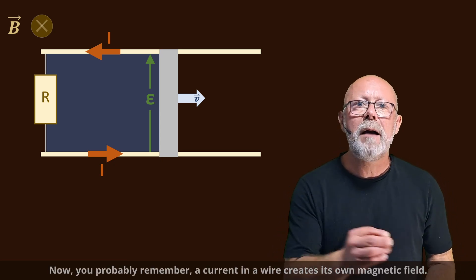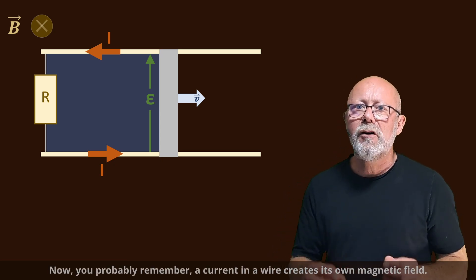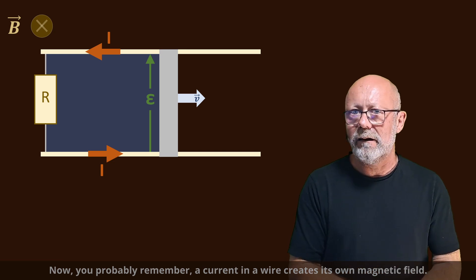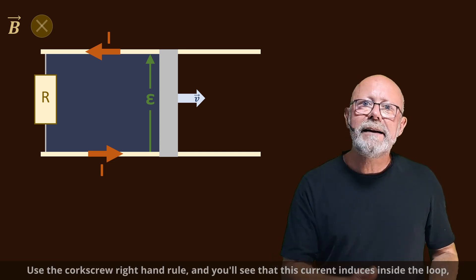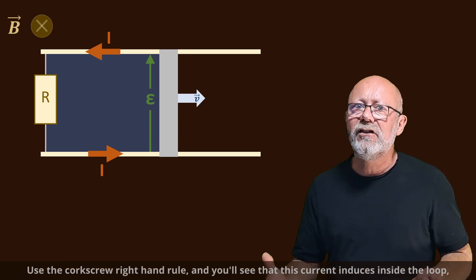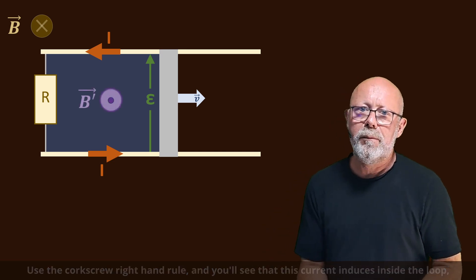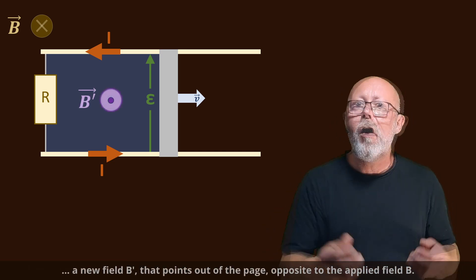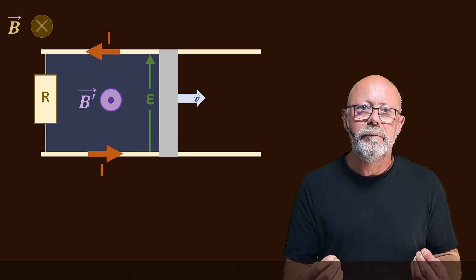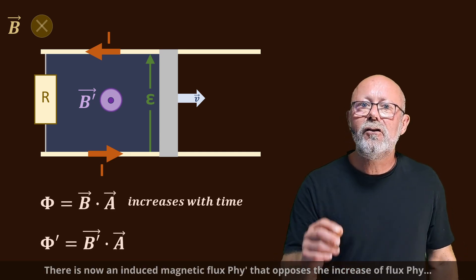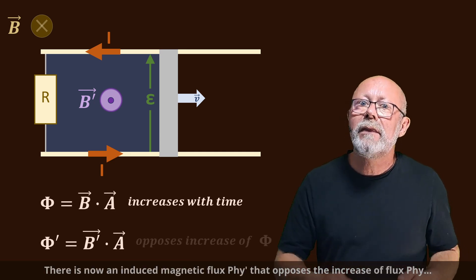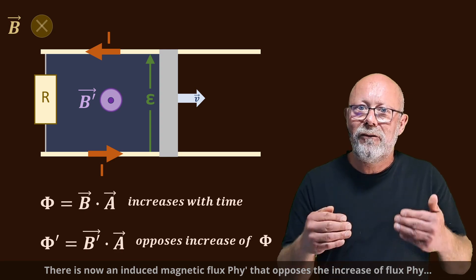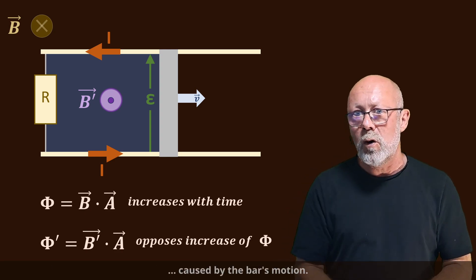Now, you probably remember, a current in a wire creates its own magnetic field. Use the corkscrew right-hand rule, and you'll see that this current induces inside the loop a new field B' that points out of the page opposite to the applied field B. There is now an induced magnetic flux phi' that opposes the increase of flux phi caused by the bar's motion.